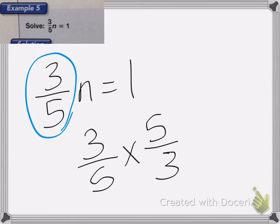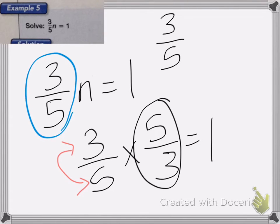Remember, we just flip that number. We flip it over. Equals 1. So 5 thirds is my answer. Now, if you want to double check, you do the problem. 3 fifths times 5 thirds equals... 3 times 5 is 15. 5 times 3 is 15. 15 over 15 is equal to 1. So that is the correct answer.